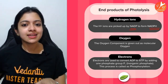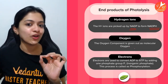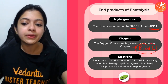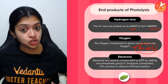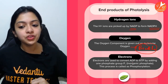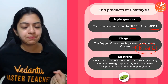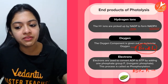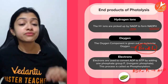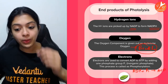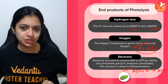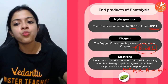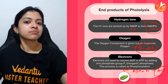Oxygen is given out through the stomata as molecular oxygen — this is the life-sustaining gas that we all breathe. The electrons are used to convert ADP to ATP by adding one inorganic phosphate: ADP + inorganic phosphate → ATP. This is called phosphorylation, and since it occurs in the presence of light, we call it photophosphorylation. So that is where the electrons are used.